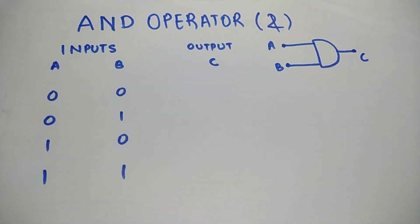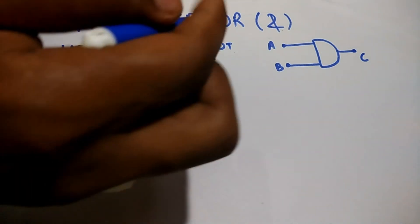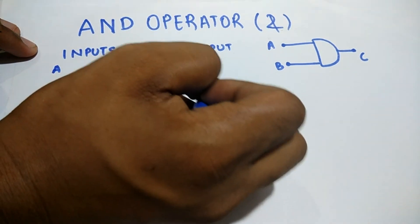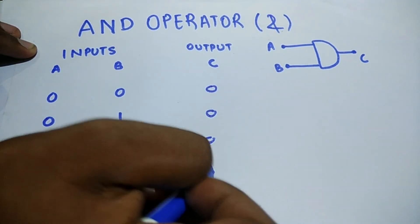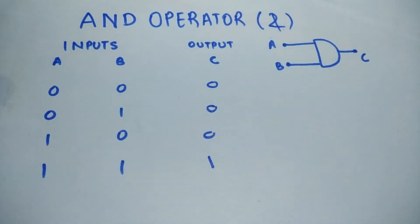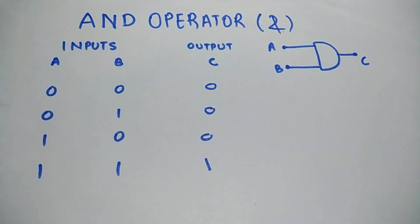I have given the inputs as per the condition: if both inputs are high then only the output is high. So we can say three of these outputs are zero and the last one is one. This is the AND operator — as you can see, the last one is high because both inputs are high, else all are low.